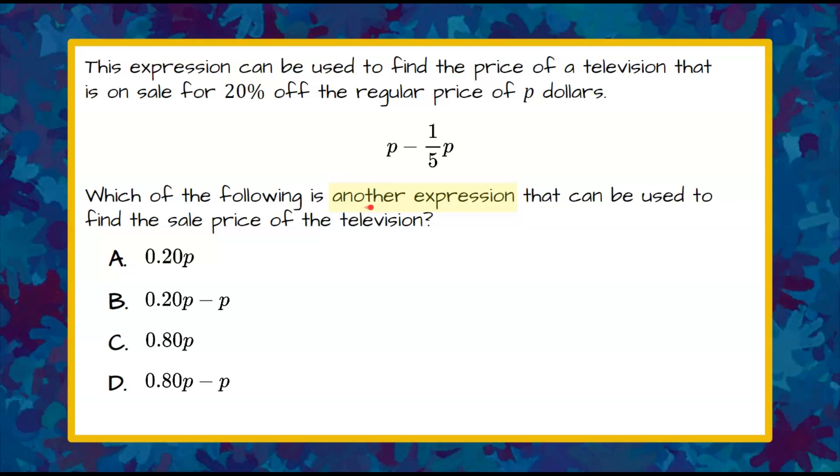We're going to first understand that this is another expression, meaning the one answer is equivalent to this expression, it's just a different way to write it. We're going to note that we've been given this expression representing something that is on sale for 20% off, and we have a regular price of P dollars.